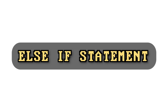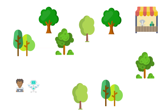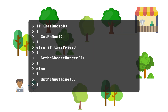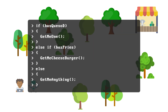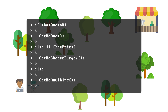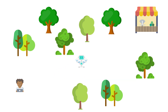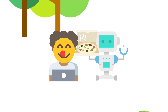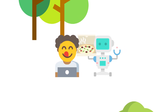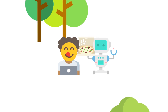To correct something like this, you can bring in the else-if statement — the if statement's other partner in crime. Going back to our example, you could tell your robot: if they have spicy jack quesadillas give me one, else if they serve french fries get me a cheeseburger, else give me anything. Else-if statements are essentially like backup if statements, and that's pretty much all there is to them.